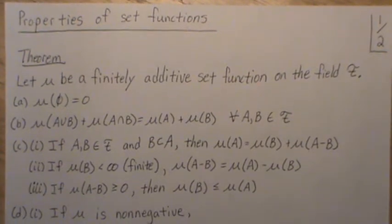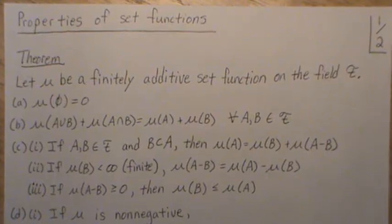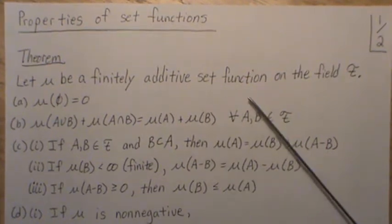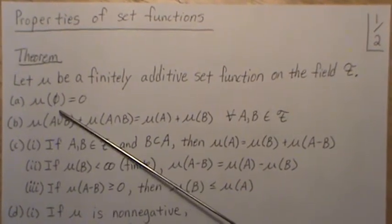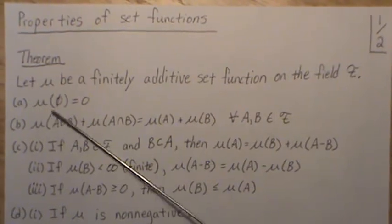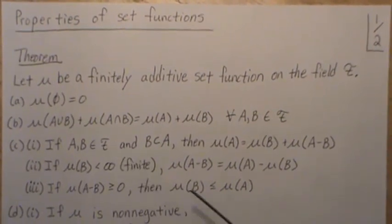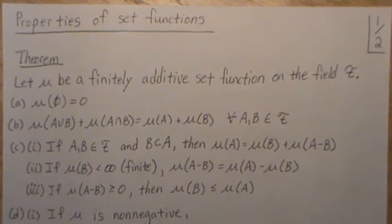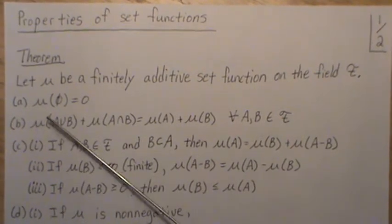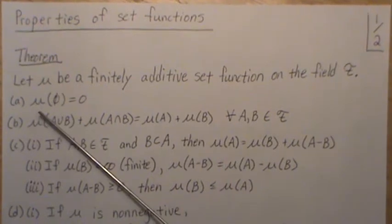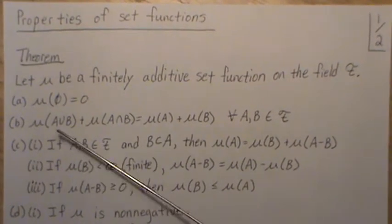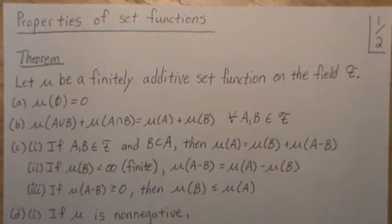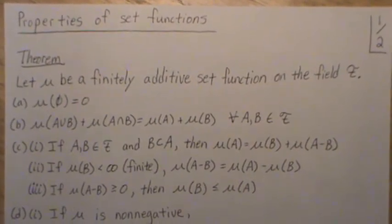We're going to introduce these properties as a theorem. Let mu be a finitely additive set function on the field F. Note it's not a measure because it's just a set function so far — measure means it's a non-negative set function. So mu of the empty set, where mu is the set function, is equal to zero. And mu of A union B plus mu of A intersect B is equal to mu of A plus mu of B.